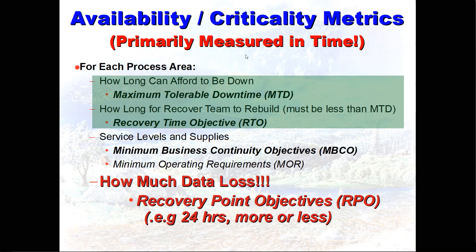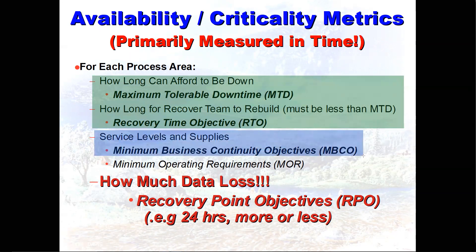Probably the most overlooked thing: a lot of people just look at service levels — you've got to be able to print 20 pages per minute — but that's not going to work without paper. I like to call it minimum operating requirements. ISO 22301 is an ISO standard on business continuity, used as an auditable standard. They use the term minimum business continuity objectives, and this defines our service level supplies.